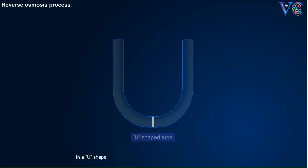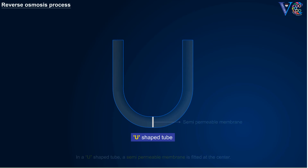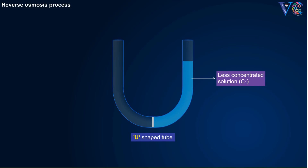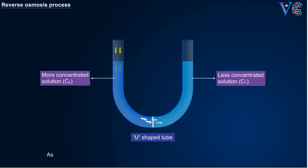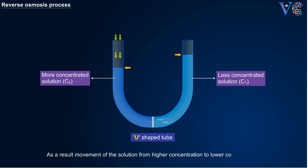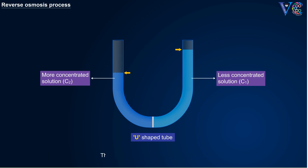In a U-shaped tube, a semi-permeable membrane is fitted at the center. One side is filled with less concentrated solution C1, and on the other side more concentrated solution C2 is filled. Now pressure is applied on the solution with higher concentration. As a result, movement of the solution from higher concentration to lower concentration through the semi-permeable membrane takes place. This process is called reverse osmosis.